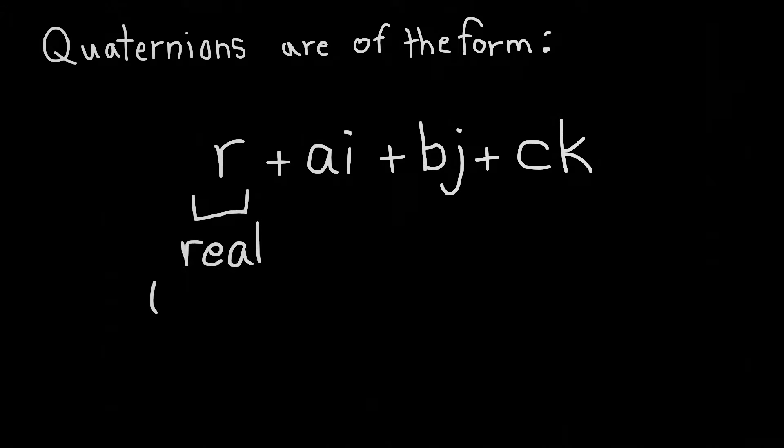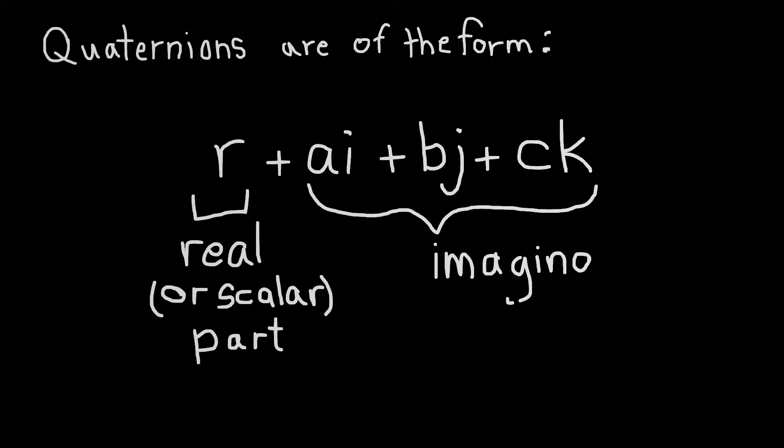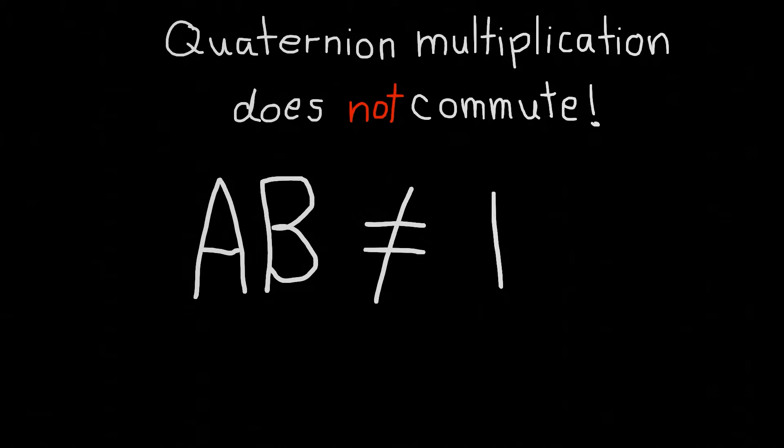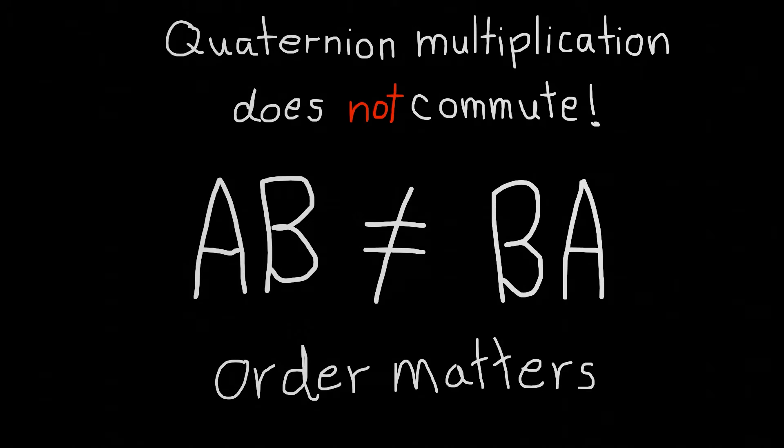The numbers that result from this identity are of the form r plus ai plus bj plus ck, where r is the real part, or the scalar part, and the i, j, and k are the imaginary part, or the vector part. One thing that's different about the quaternions versus working with the real numbers or the complex numbers is that multiplication is not commutative. So, a times b does not equal b times a. The order in which you multiply matters.